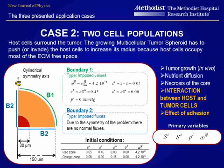The second case deals with two cell populations of an in vivo experiment. At the center of the model is a small number of tumor cells surrounded by healthy cells. The initial and boundary conditions are shown, and the primary variables are listed.